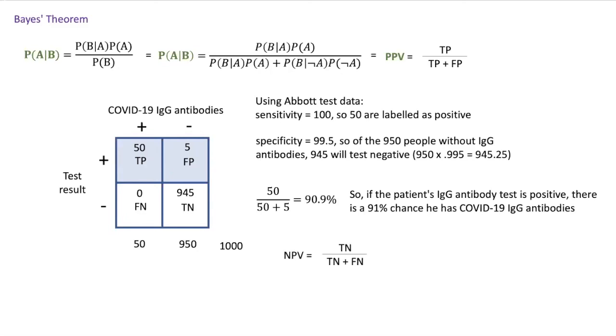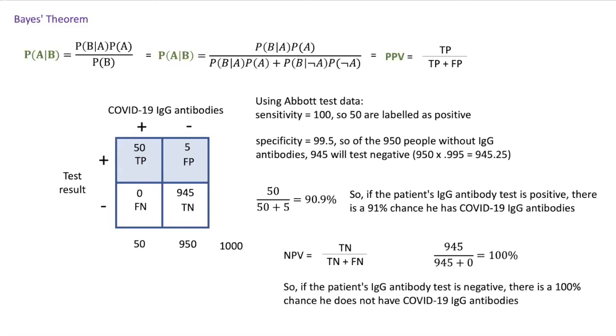And then for negative predictive value, we're going to do true negatives divided by true negatives plus false negatives. So 945 divided by 945. So that means that if a patient gets a negative IgG test result, we can be 100% sure that they do not have IgG antibodies to COVID-19.